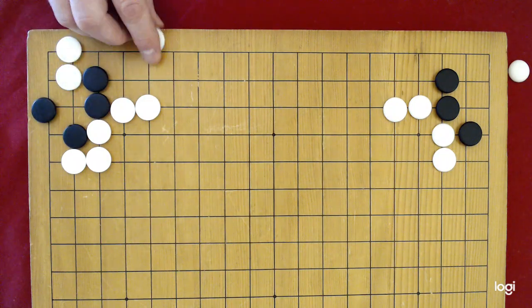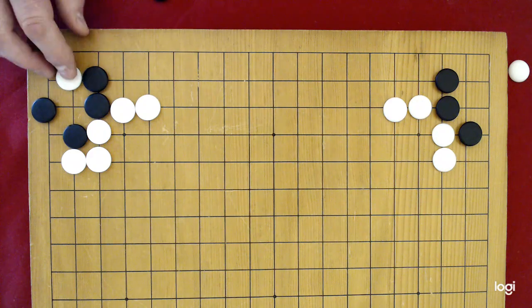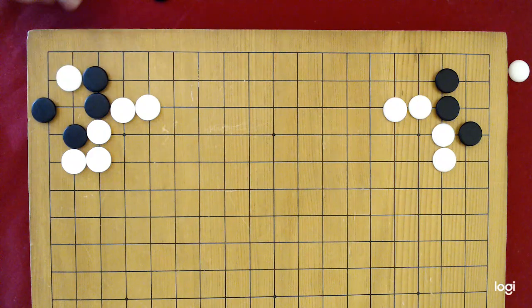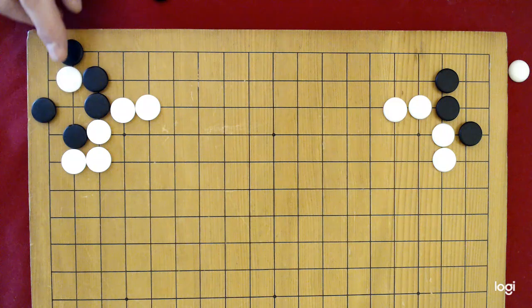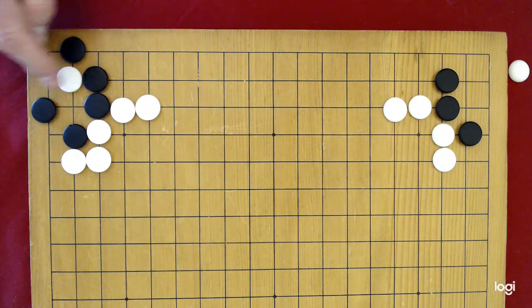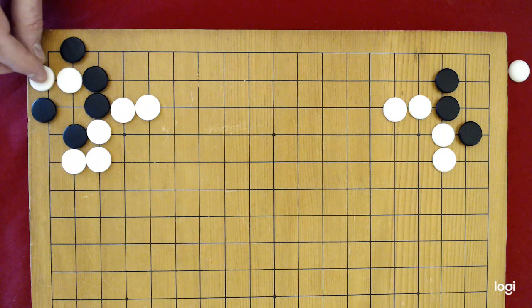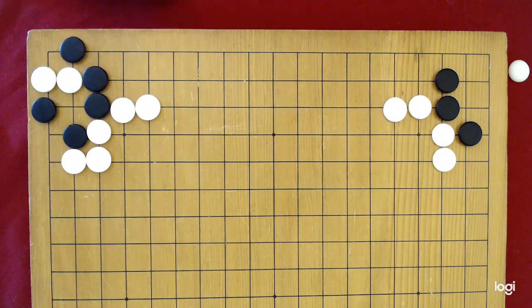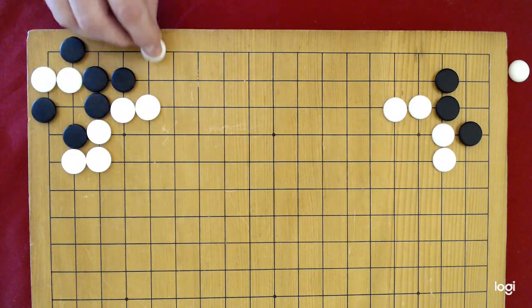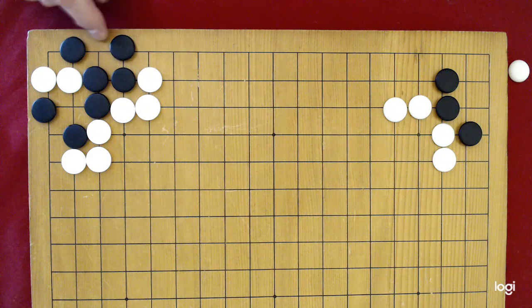And now there's no way that black can play that's going to create more than one eye. So when white, instead of coming here, when they come here, black has to play this move to keep them from coming down there. Now you can see this is a zigzag four. White's already on one of the vital points. So they go ahead and play the other. And then black is able to come out to here. White blocks and black comes down and makes two eyes.